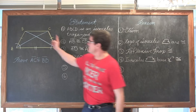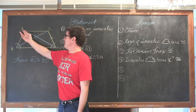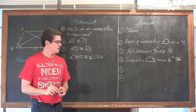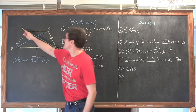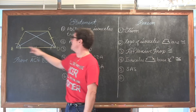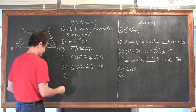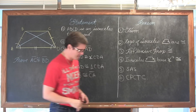With base angles congruent, our two triangles are congruent by the side-angle-side theorem. Triangle BAD is congruent to triangle CDA. Then by CPCTC — corresponding parts of congruent triangles are congruent — side BD of triangle BAD and side CA of triangle CDA are corresponding parts, and they also happen to be the diagonals of our trapezoid. Therefore the diagonals of an isosceles trapezoid are congruent.